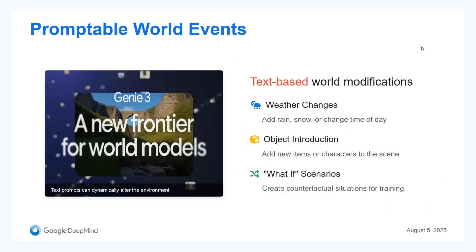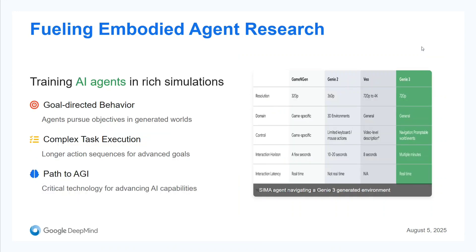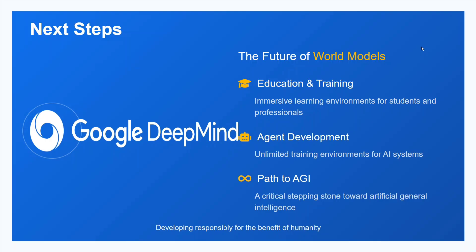Promptable world events — as we just saw, you can add rain, snow, and other events in your video, like the dragon in London example. Regarding embodied agent research, with such an innovation, it will help in multiple directions: goal-directed behavior where agents pursue objectives in a generated world, complex task execution. And it is a path to AGI — that's for sure.